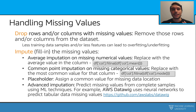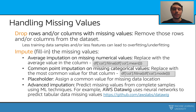The easiest way to deal with this is actually dropping the rows or columns that correspond to these missing values. Simply in our data, or maybe if we are using a data frame, we will go and drop those rows or columns. But we should be careful with this, because by doing this, we are also removing some of the data from our dataset.